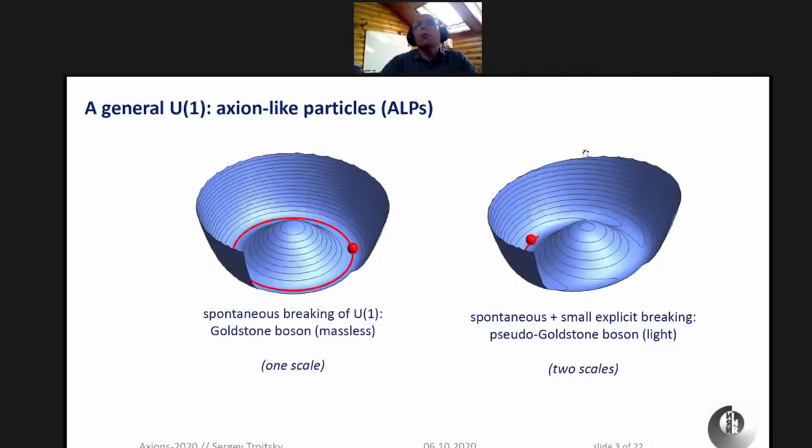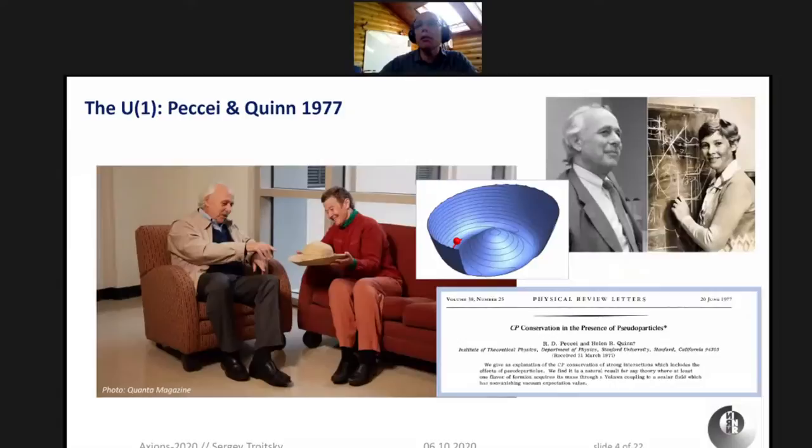For a general U(1), which may appear in many different extensions of the standard model, this is an axion-like particle. However, originally and historically, it was a particular U(1), which is related to the puzzle of the CP conservation in the strong interaction. So it is a very special U(1), which was at the origin of the axion story, due to Peccei and Quinn in 1977. Here is the title page of the paper and some nice pictures I found on the web. This particle is a proper axion, but normally people say axion and mean axion-like particles these days.